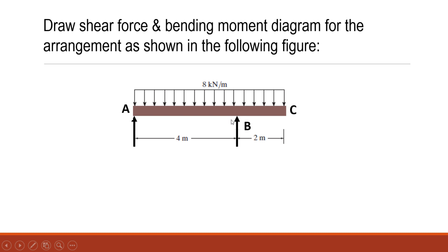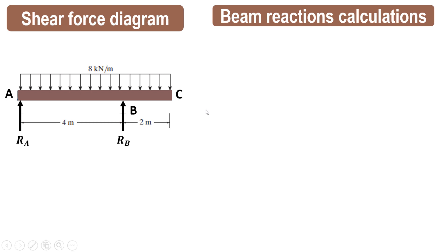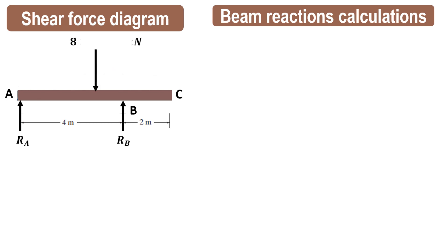For this arrangement, we first find the beam reactions by converting the uniformly distributed load into a point load. Since 8 kN per meter over 6 meters gives 8 × 6 = 48 kN, and as this is a rectangular distribution, the load acts at the center of the 6 meter length, that is at 3 meters. So we convert the UDL into a 48 kN point load acting at 3 meters from A.